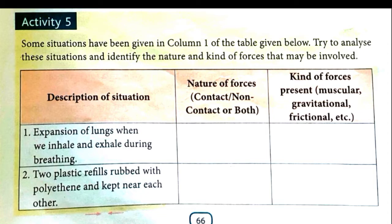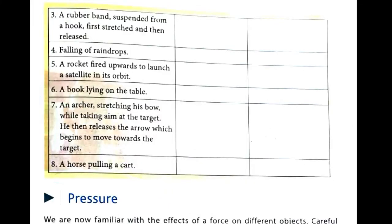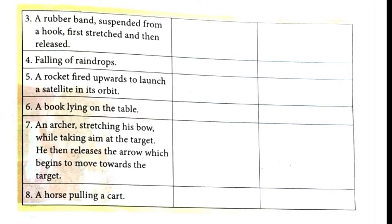Second situation: two plastic refills rubbed with polythene and placed near each other. Since they are rubbed with polythene, this is a type of non-contact electrical force. Third situation: falling of raindrops. Falling of raindrops is a non-contact force — rain and earth are not in direct contact — and this is an example of gravitational force.